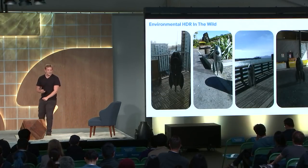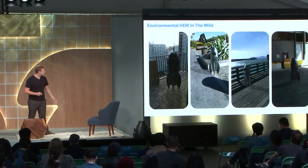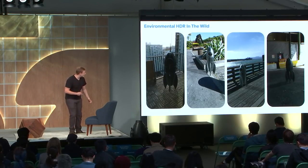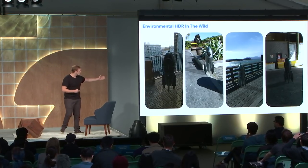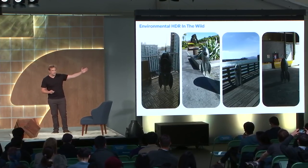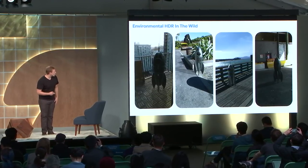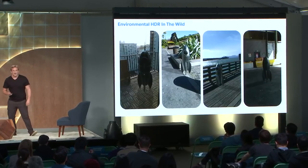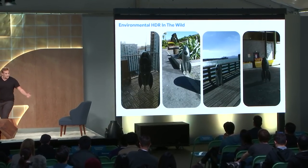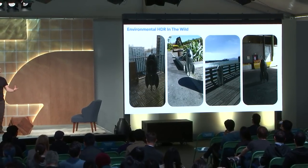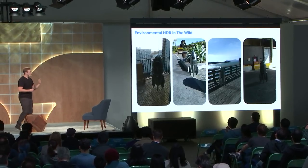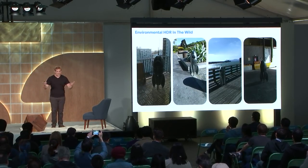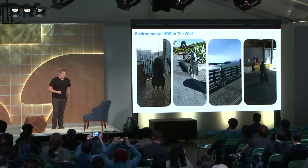Let's see what this looks like in a few other natural environments. We took our rocket and played with it around the Bay Area — watching the sunset, playing in the park, watching the boats by the water, parking in a garage. In all of these cases, the shading is matching the environment, the specular highlights match what's believable, and the shadows match what's actually coming in, mostly from sunlight.